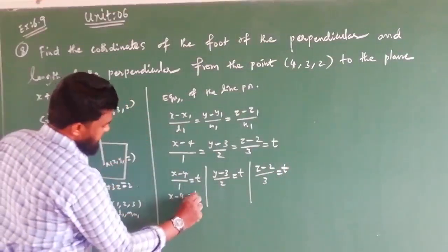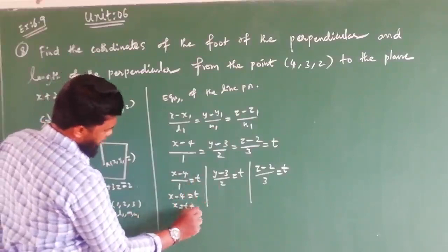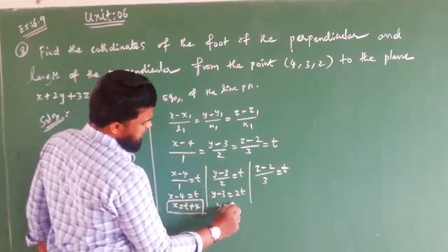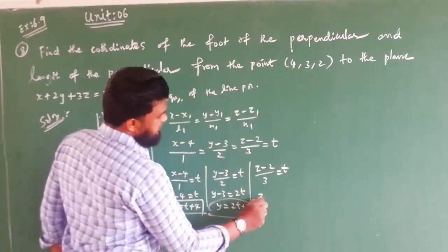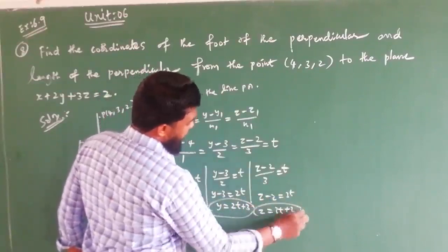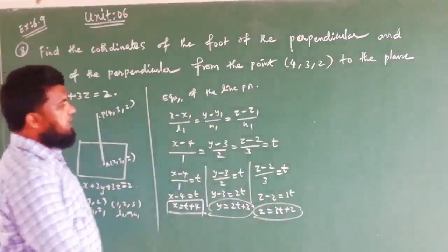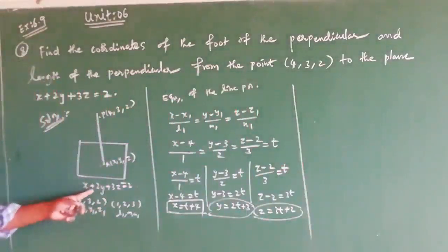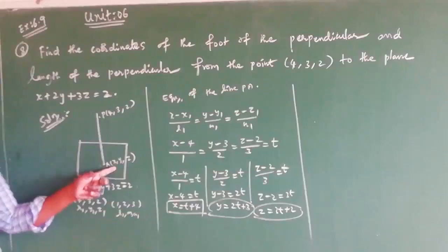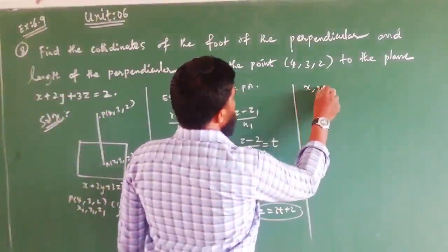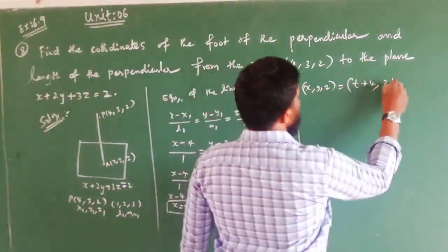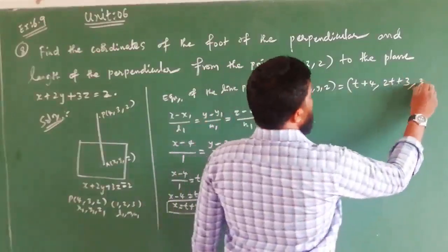From the parametric form: x minus 4 equals T, so x equals T plus 4. Next, y minus 3 equals 2T, so y equals 2T plus 3. And z minus 2 equals 3T, so z equals 3T plus 2. This gives the x, y, z values on the line to be substituted into the plane equation.